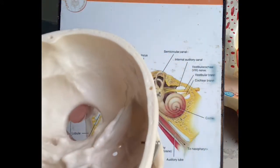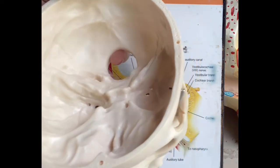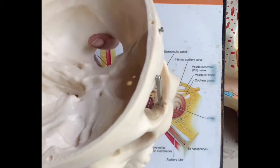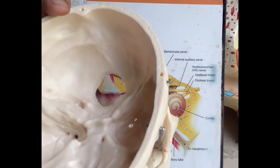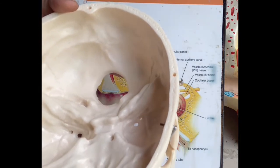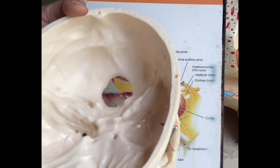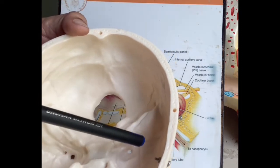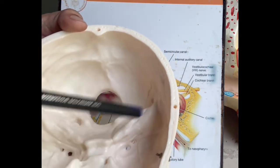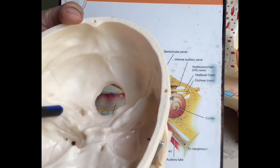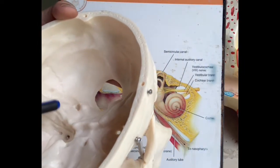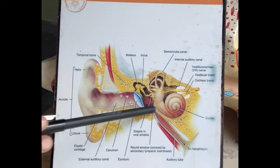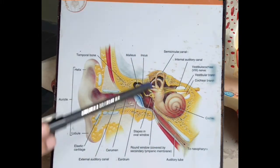This is the skull. We know the three compartments of the cranial cavity: anterior, middle, and posterior. In between the middle and posterior compartments, this part is known as the petrous portion of the temporal bone. This is the temporal bone, and this is the petrous portion of the temporal bone. Within this petrous portion, the middle ear cavity and the internal ear are located.